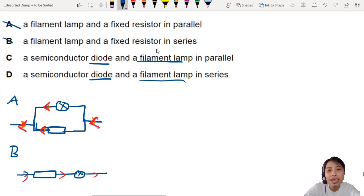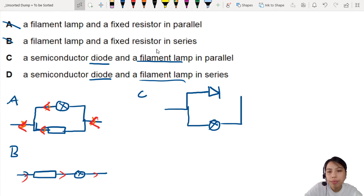So we'll start with C and D. Are they in parallel or are they in series? Let's draw out the circuit. So C, you have them in parallel. So you have a diode and you have a lamp. Let's say we send currents in the direction that the diode allows, this way.